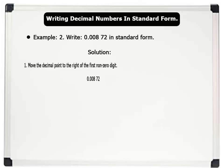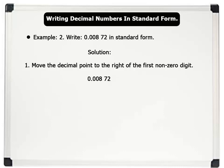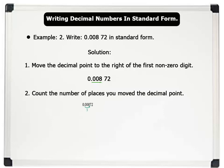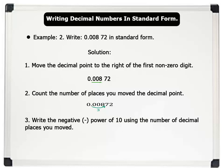Solution. Step 1: Move the decimal point to the right of the first non-zero digit. Step 2: Count the number of places you moved the decimal point. The decimal point is moved three places to the right. Step 3: Write the negative powers of ten using the number of decimal places you moved. Therefore, 0.00872 equals 8.72 times 10 raised to the power minus 3.